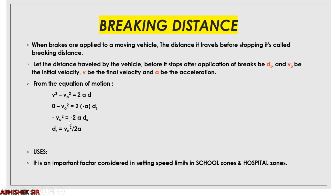Simplifying: −v₀² = −2a·ds. The negatives cancel, and taking 2a to the other side, we finally get the formula for braking distance: ds = v₀² / 2a. Here v₀ is the initial velocity and a is the retardation.